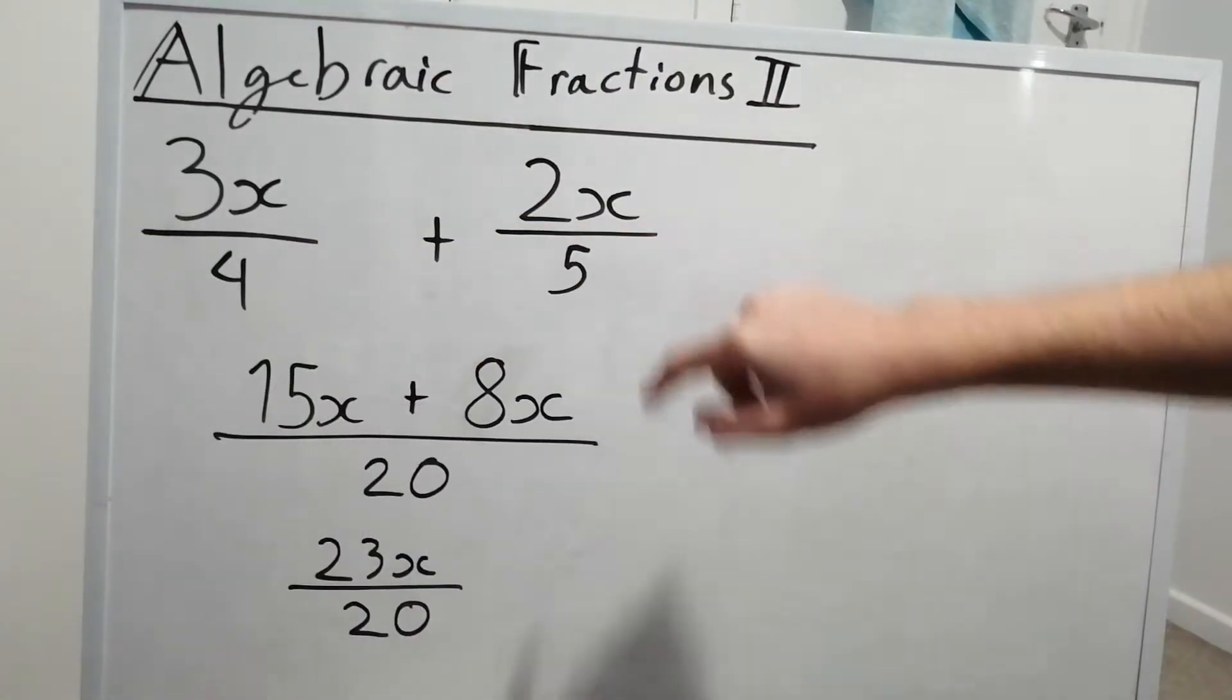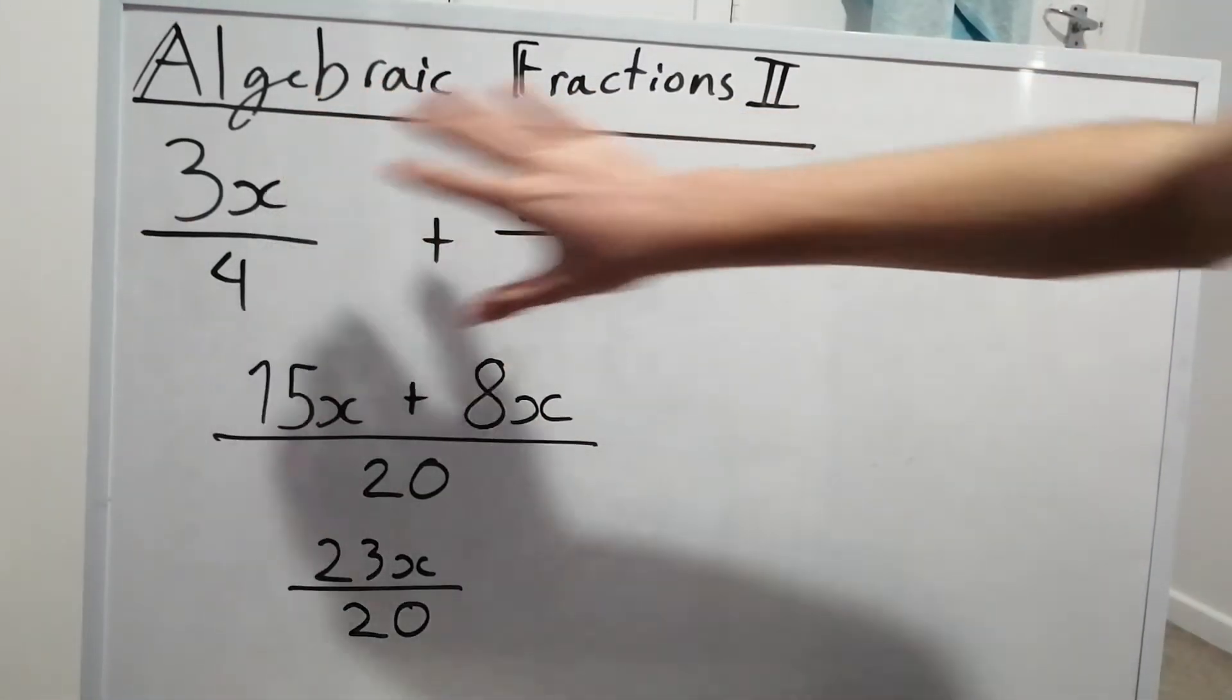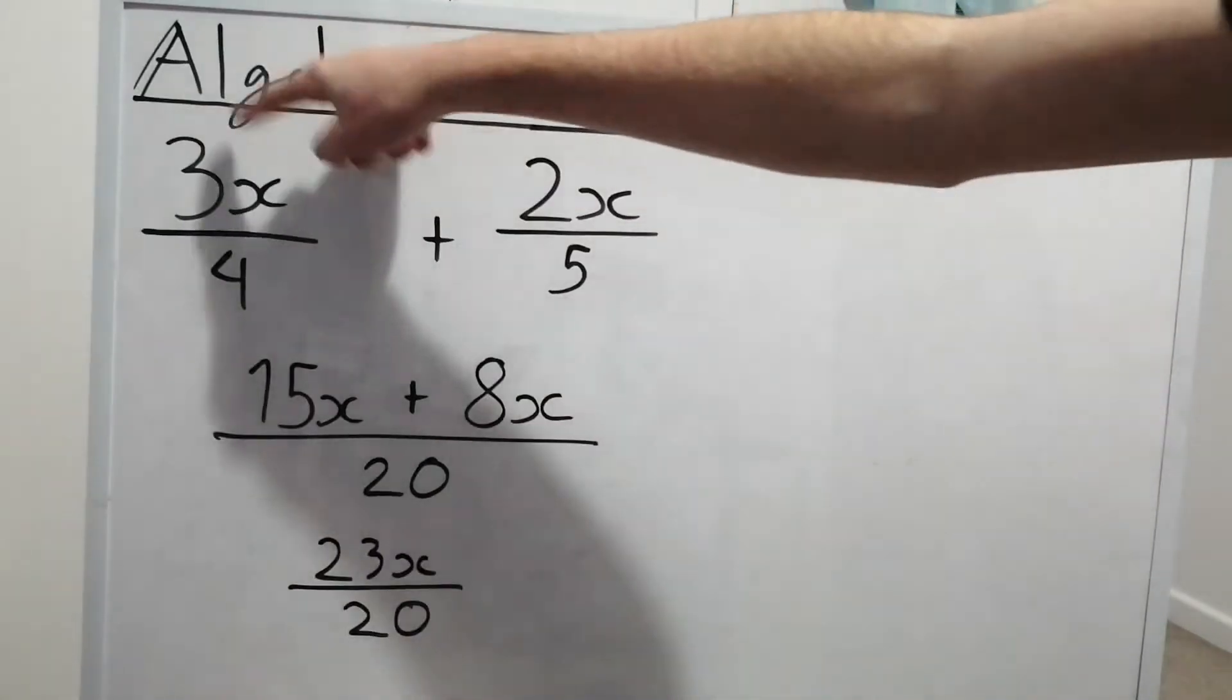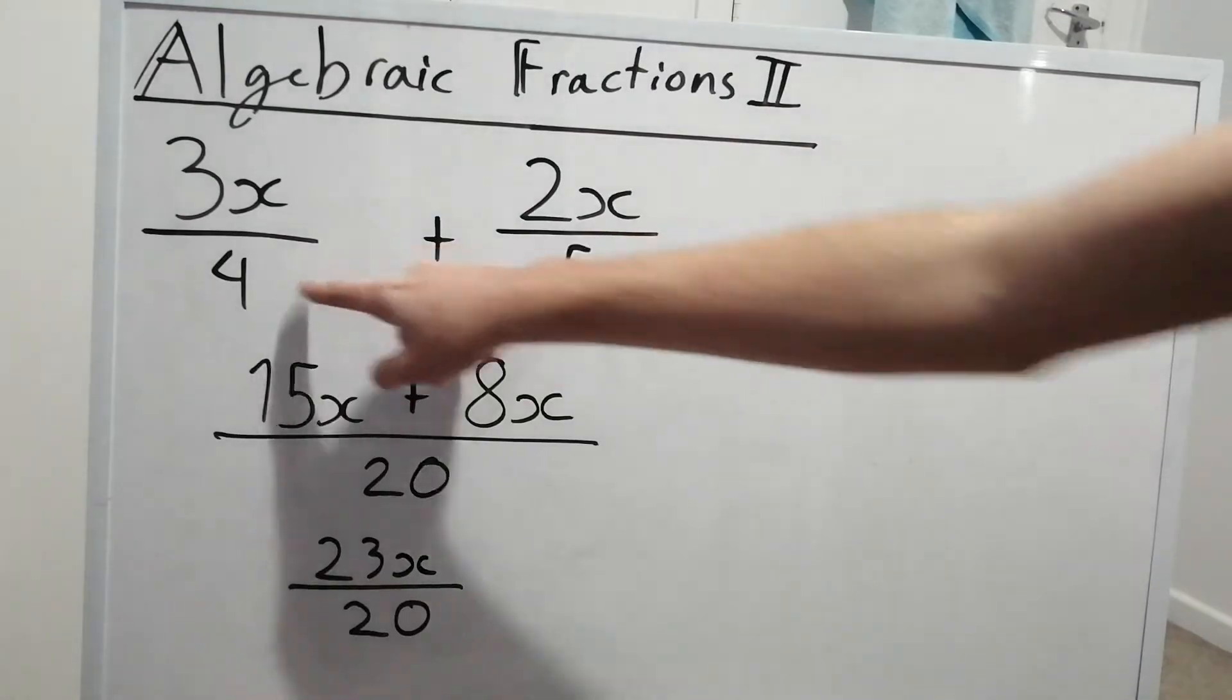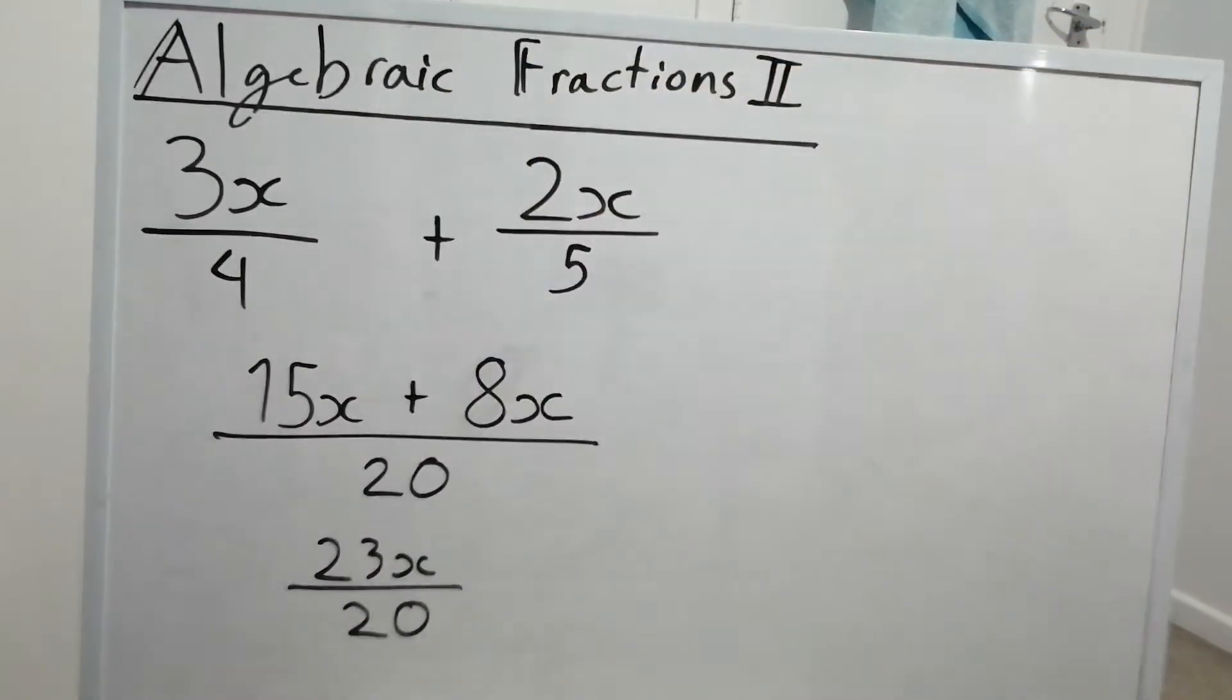So now we've got to add two algebraic fractions. They're really just the same as regular fractions, we've just got the coefficient thing going here. So we'd solve it the same way. Basically, we want these two bottom ones to be the same number so we can add the top ones.